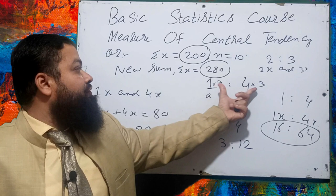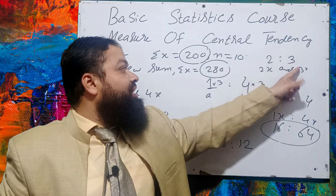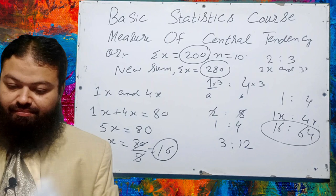Whenever you have a ratio question, suppose the numbers accordingly: for ratio 1:4, use 1x and 4x; for ratio 2:3, use 2x and 3x.